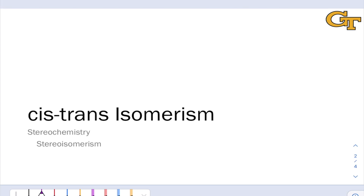In this video, we're going to look at a specific type of isomerism that's a type of stereoisomerism known as cis-trans isomerism, or sometimes this is called ZE isomerism, for the stereochemical descriptors that correspond to cis and trans structures.